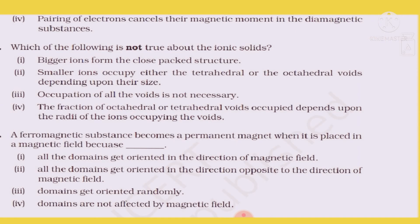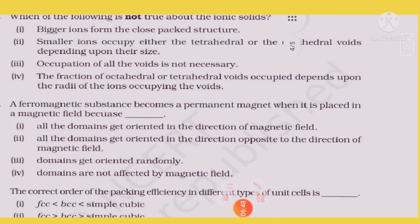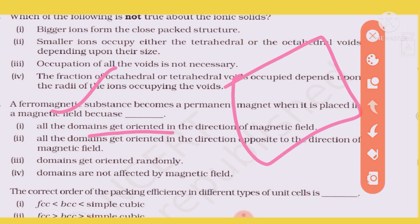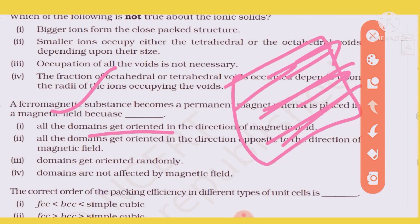Question 32: Ferromagnetic substances become permanent magnets when placed in a magnetic field because all the domains are oriented in the direction of the magnetic field. This alignment in the direction of the magnetic field makes it a permanent magnet.